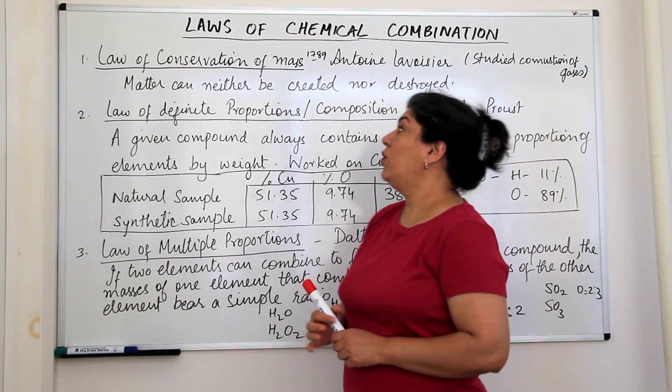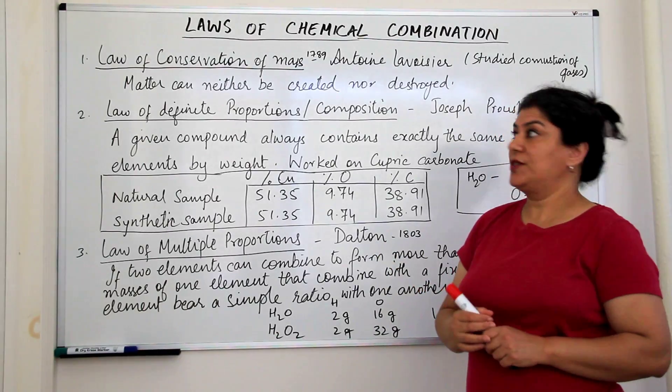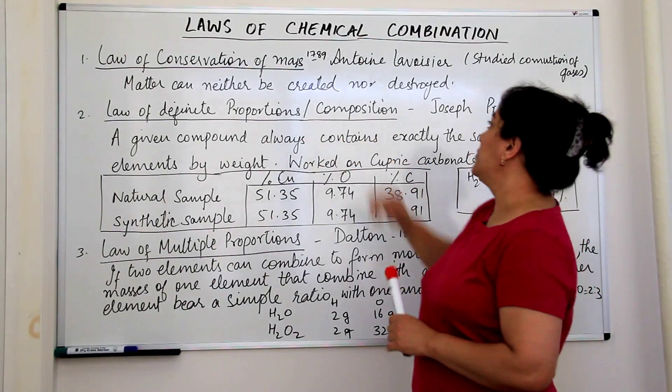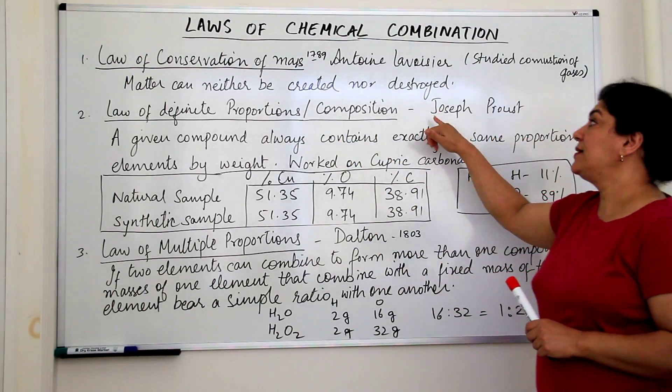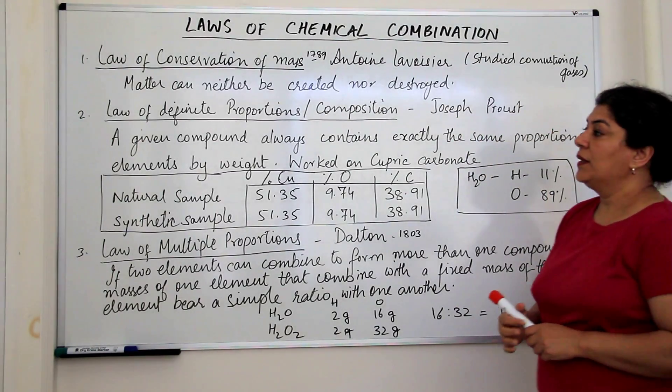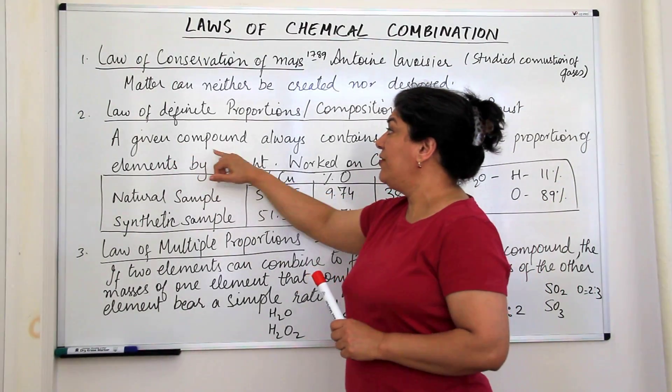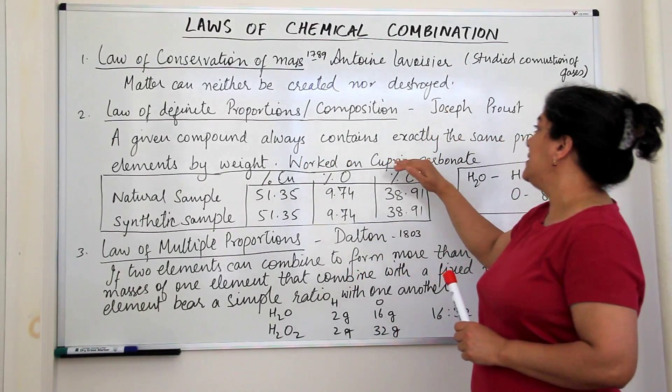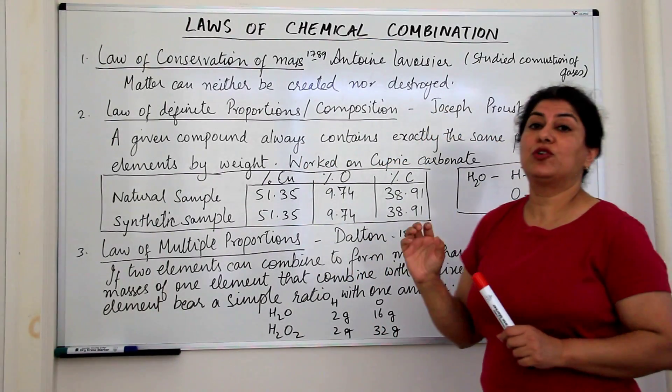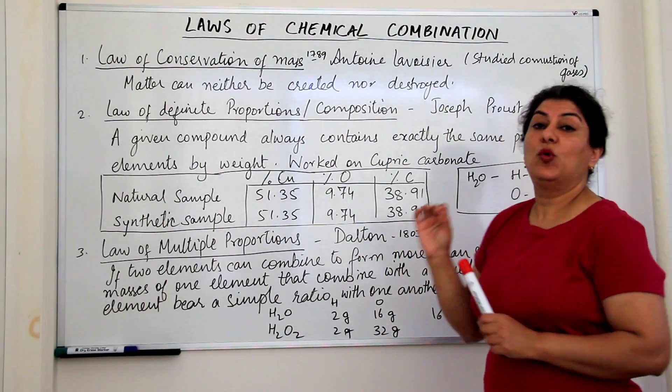The next law is the law of definite proportions or definite compositions. This was given by a scientist called Joseph Proust.